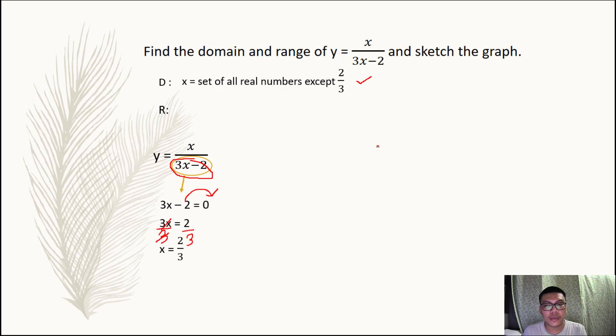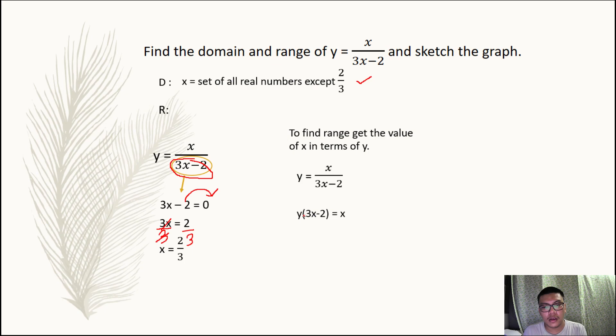Now to solve for the value of our range, to find range get the value of x in terms of y. So solving now for x, cross multiply and we obtain y times 3x minus 2 is equal to x. Then distribute the y, we obtain 3xy minus 2y is equal to x.